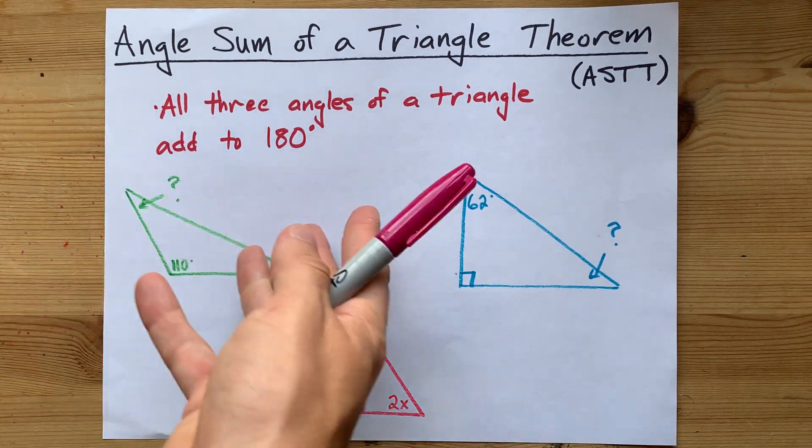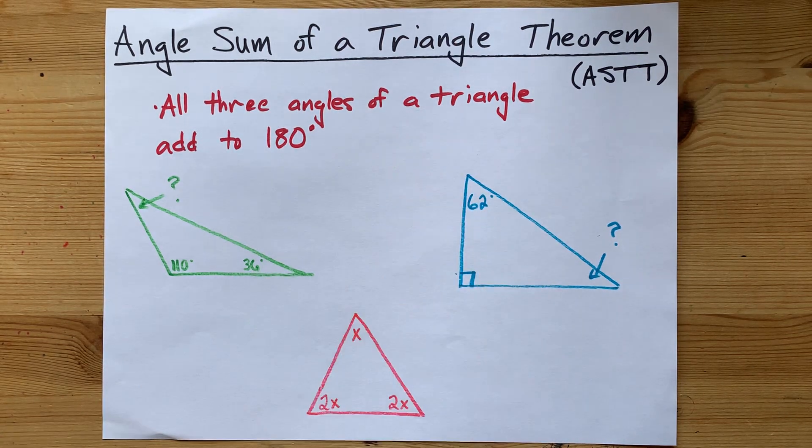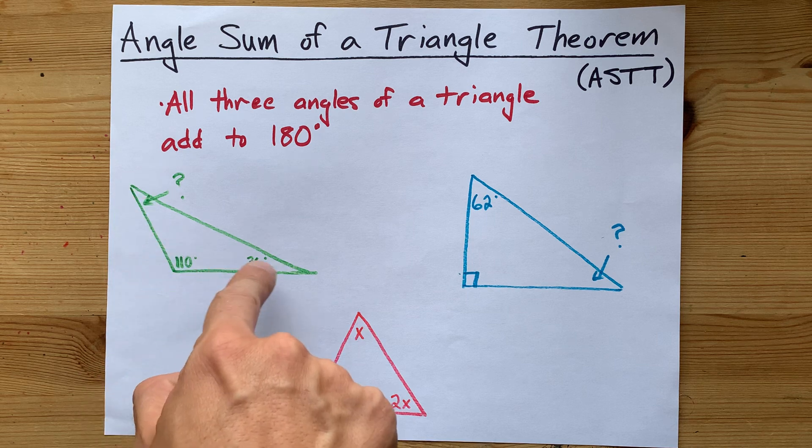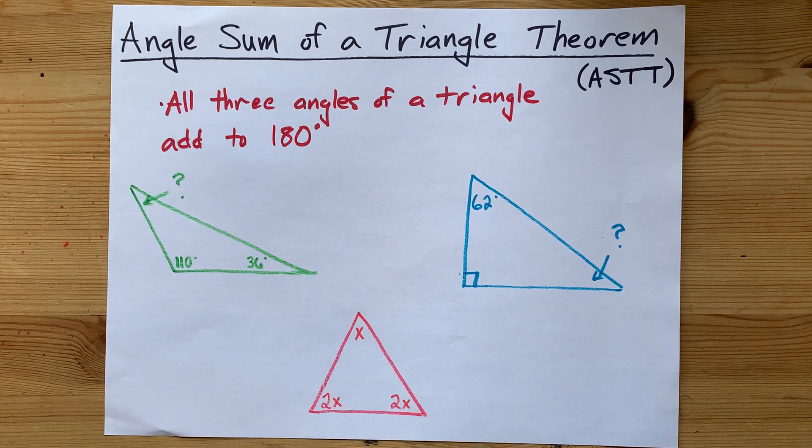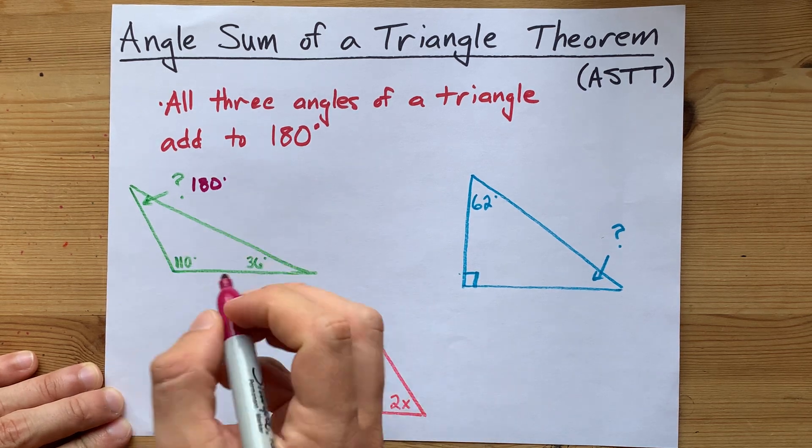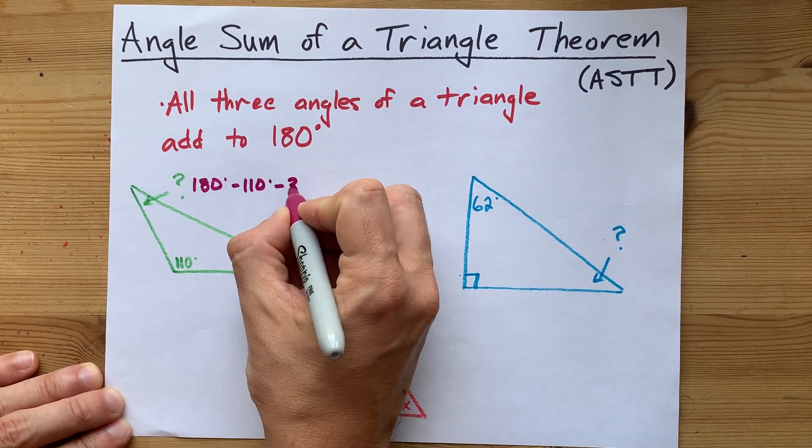Now this is only true if it's a flat triangle. In three dimensions that goes out the window, but that's not the point. The point is, if you're asked for the third angle of a triangle and you're given the two other angles, you can get the size of that third angle by taking 180 and subtracting the other two angle measures.